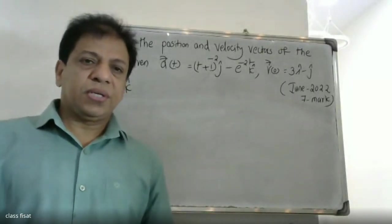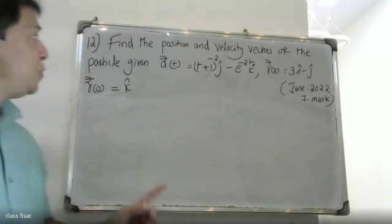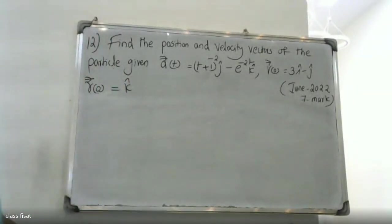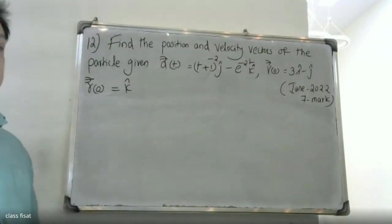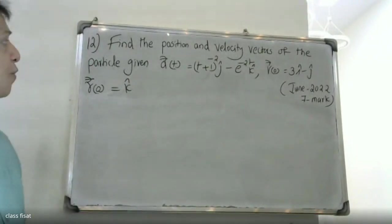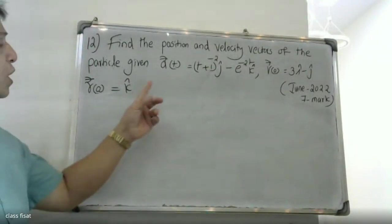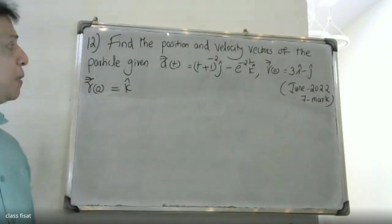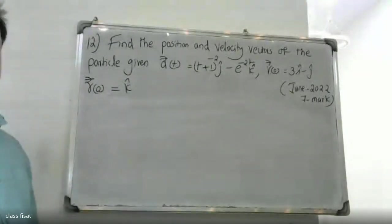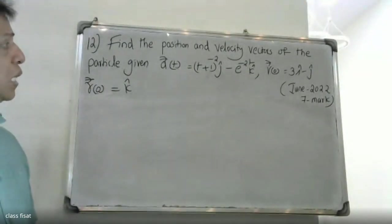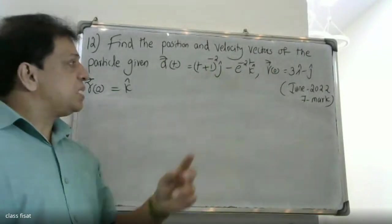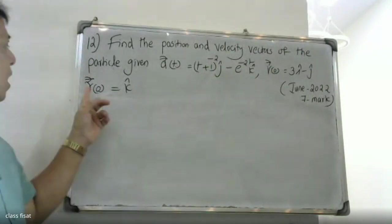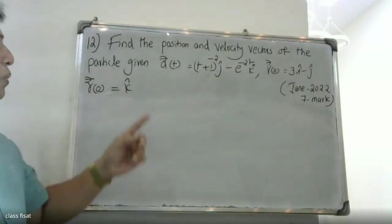Good morning, students. This is the university question. Find the position and the velocity vectors of the particle, given that a of t is equal to t plus 1 raised to minus 2 into j, minus e raised to minus 2t into k. v of 0 is equal to 3i minus j, and r of 0 is equal to k.